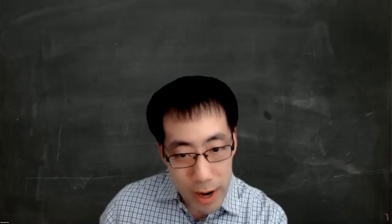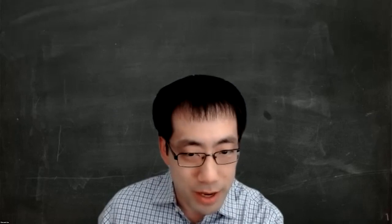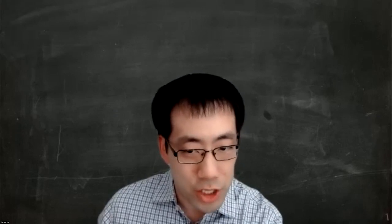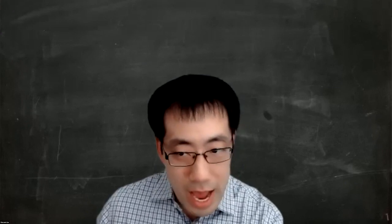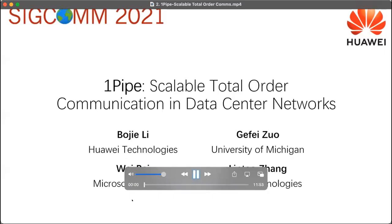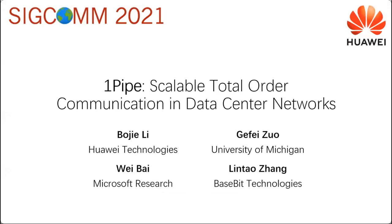For the second talk of this session, we have One Pipe. The speaker is Bojia Li, a senior engineer with Huawei Technologies, who obtained his PhD from the University of Science and Technology of China in 2019. His research interests are in data center networking and systems.